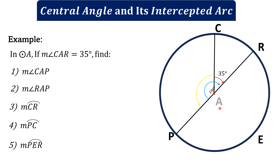Angle CAP and angle CAR form a straight angle that measures 180 degrees. So if the straight angle formed by these two adjacent angles is 180 degrees, we can find angle CAP by subtracting 35 from 180, giving us 145 degrees.